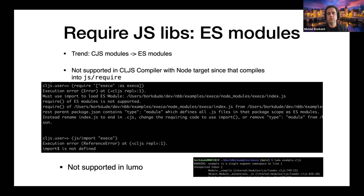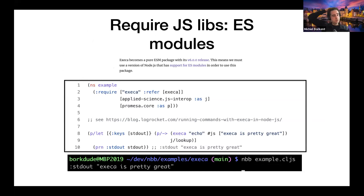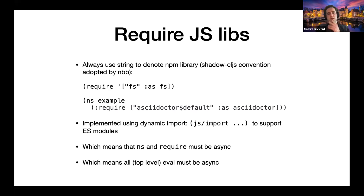If you use the standard Node compilation target of ClojureScript, you can no longer use these modern ESM-only libraries. But in NBB you can use them. Here's an example: we use Execa with `refer [execa]` and it works fine. So NBB gives you access to the modern Node.js library ecosystem.